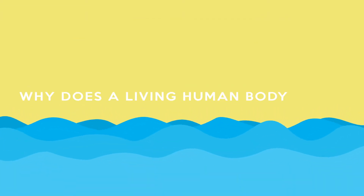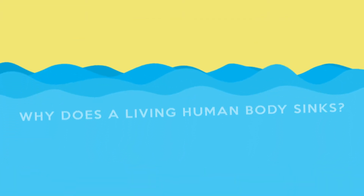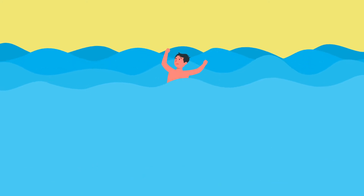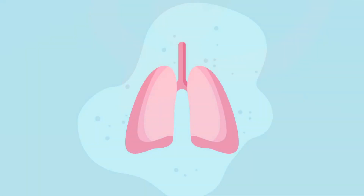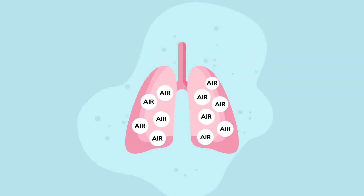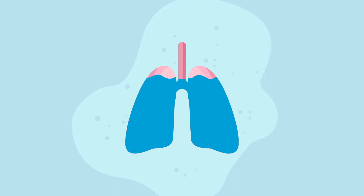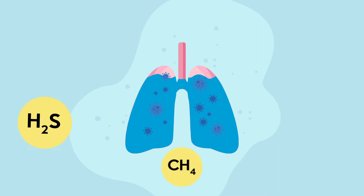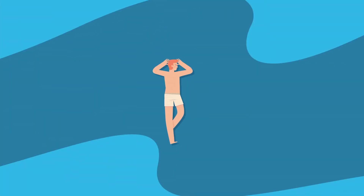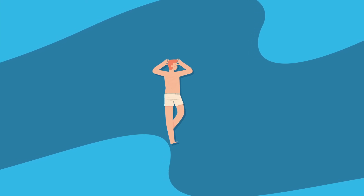A human body only starts to sink in the water when the air in his lungs is replaced with water. Once the body is submerged, it stays under the water until the bacteria in the gut and the cavity in the chest produce enough gases — such as hydrogen sulfide, methane, and carbon dioxide — in order to float on the surface of the water, just like a balloon.